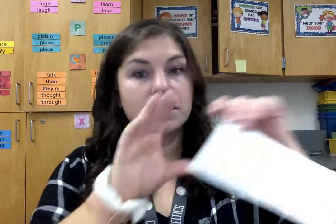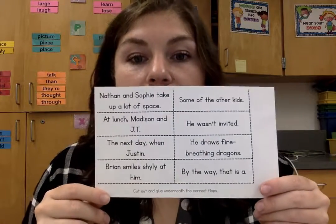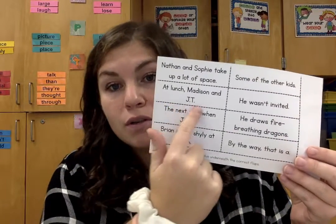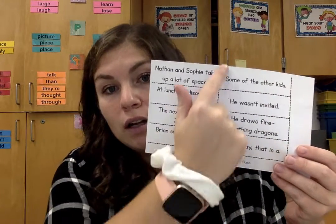And the next thing you have is these little sentences, and some of them are complete sentences and some of them are incomplete sentences. So what you are going to do is you are going to cut along the dotted lines and cut them out so you have little sentence strips like this.